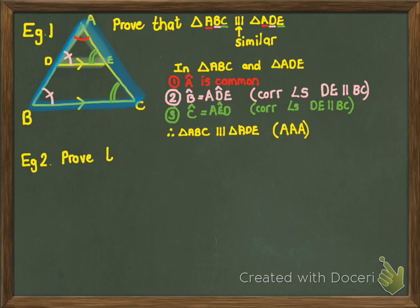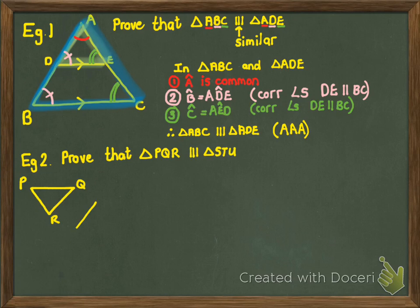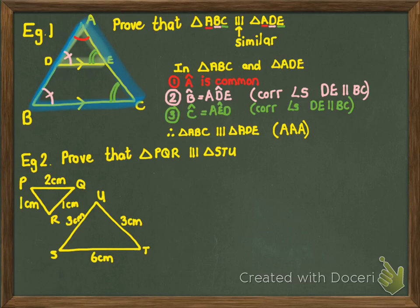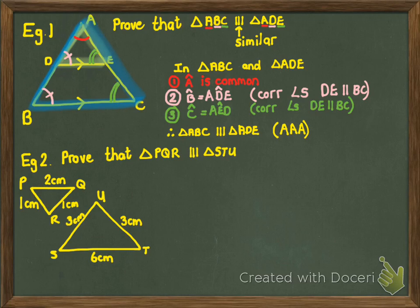Let's look at a different example. This question says prove that triangle PQR is similar to STU, and we're given the lengths of the sides. Since we have side lengths, we're probably not proving angle, angle, angle — we're trying to prove the sides are in proportion. Being in proportion means that the one triangle is a certain enlargement of the other, so each of the sides is the same number of times bigger than the corresponding side in the smaller triangle.